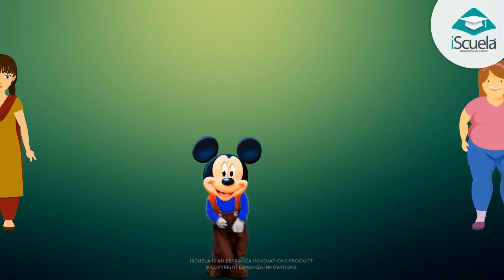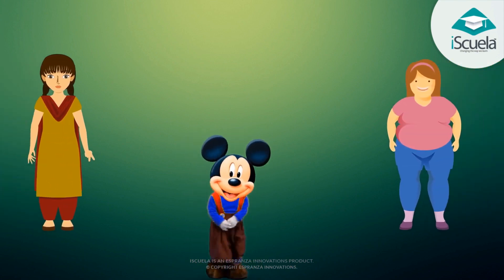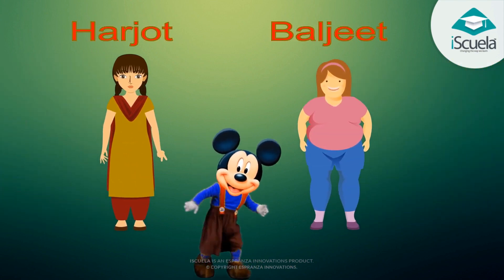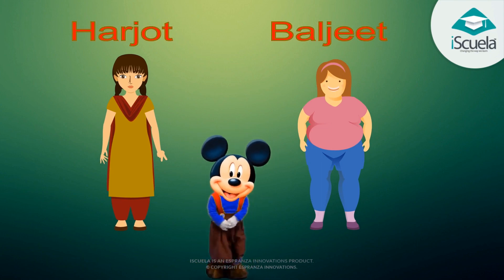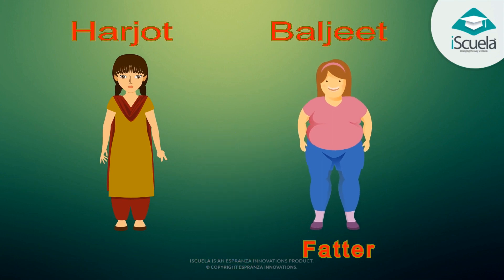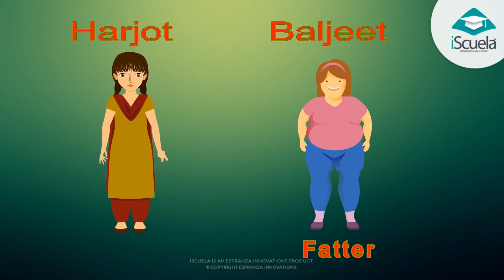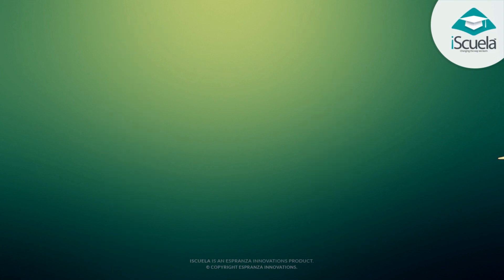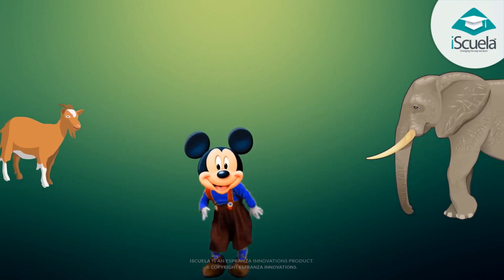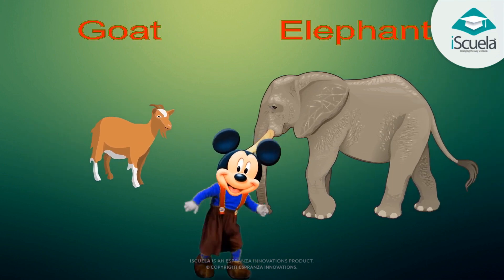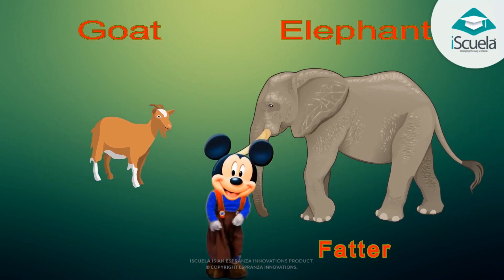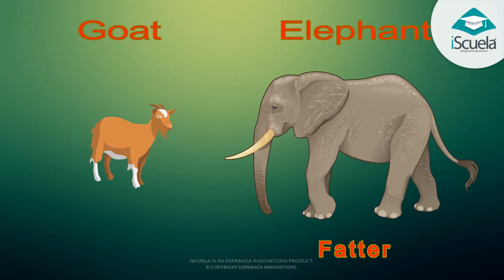Who is shorter? Who is thinner? Look and tell. Baljeet is fatter. Her tooth is thinner. Who is fatter? Who is thinner? Elephant is fatter. Goat is thinner.